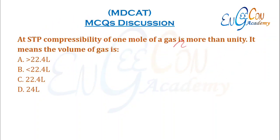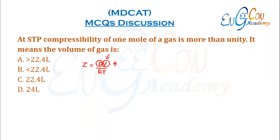At STP, compressibility of 1 mole of a gas is more than unity, so the factor Z is greater than 1. At STP, the pressure is 1 atm and volume should be 22.4 L. If Z is greater than 1, it means the volume is greater than 22.4 L. So A is the correct option.